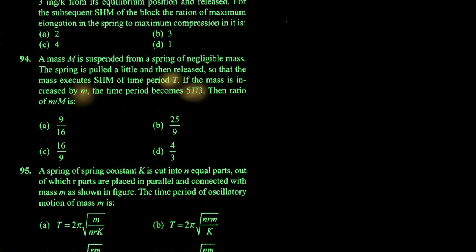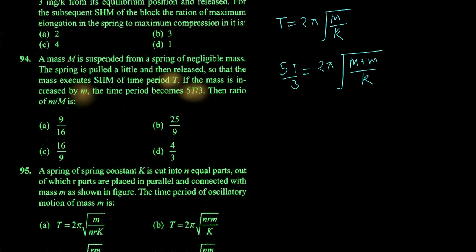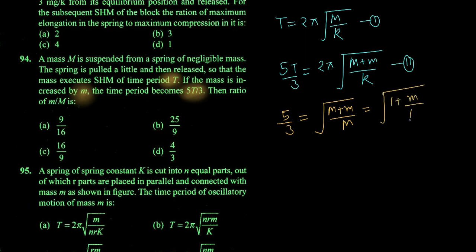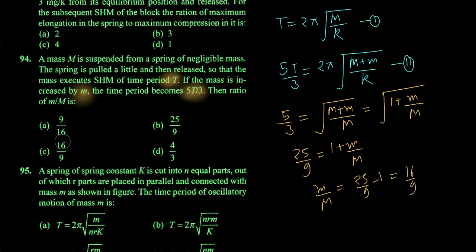When mass is M, time period is T: T = 2π√(M/k). When mass is increased to M + m, time period becomes 5T/3: 5T/3 = 2π√((M+m)/k). Dividing the second by the first: 5/3 = √(1 + m/M). Squaring: 25/9 = 1 + m/M, so m/M = 25/9 − 1 = 16/9. Your answer is 16/9.